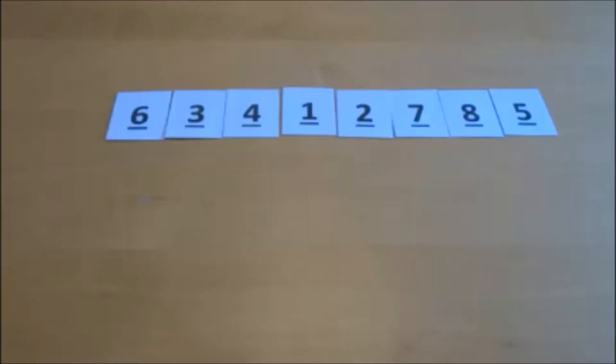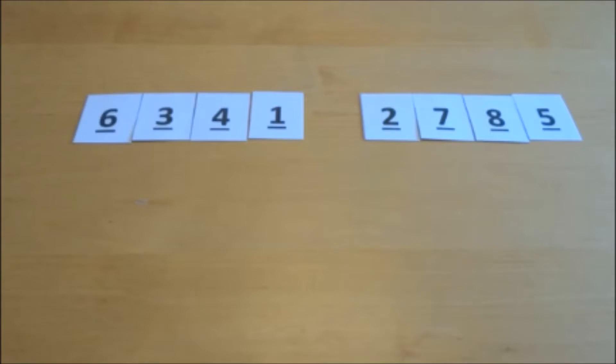Here we have a list of eight numbers that we're going to sort together using the merge sort. The first thing we need to do is split the list into two, so find the middle and split it in half.